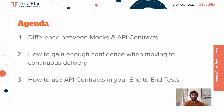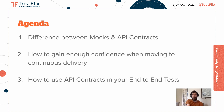What are we going to be talking about today? The difference between mocks and API contracts and how you can convert one into the other. How to gain enough confidence when moving to continuous delivery, which can be quite tricky in microservices, and how to use API contracts within your end-to-end tests to make them more stable and reliable.